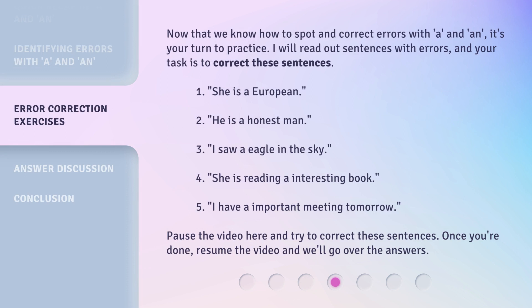Now it's your turn to practice. I will read out sentences with errors, and your task is to correct these sentences. 1. She is a European. 2. He is a honest man. 3. I saw eagle in the sky. 4. She is reading an interesting book. 5. I have an important meeting tomorrow. Pause the video here and try to correct these sentences. Once you're done, resume the video and we'll go over the answers.